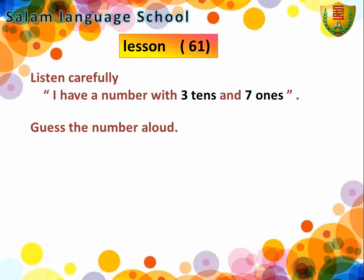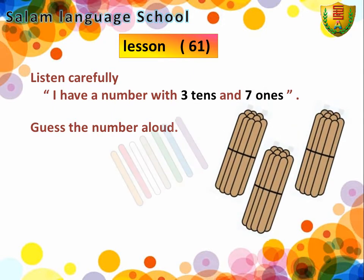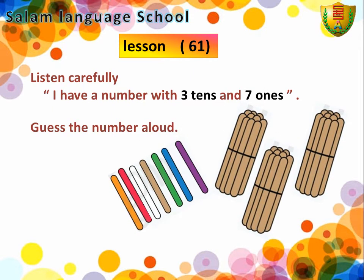This term we are going to start with a playing game. Let's guess this number. I think about a number that has three tens and seven ones. Can you guess the number aloud? It's 37.